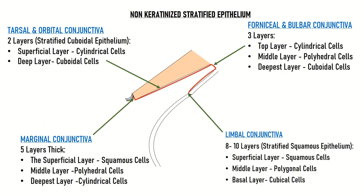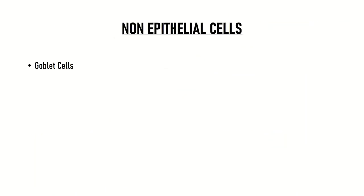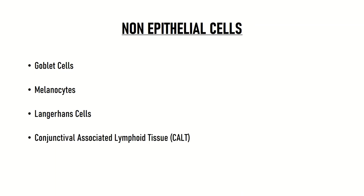Keratinization may occur in diseases like vitamin A deficiency, keratoconjunctivitis sicca, Stevens-Johnson syndrome, etc. The various non-epithelial cells found in the conjunctival epithelium are goblet cells, melanocytes, Langerhans cells, conjunctival-associated lymphoid tissue, and mucosal-associated lymphoid tissue.